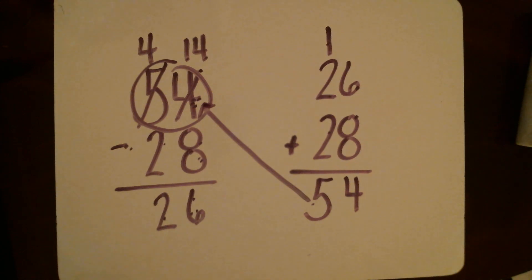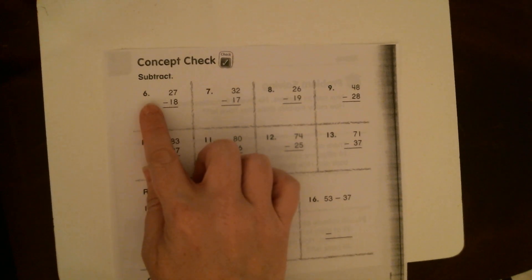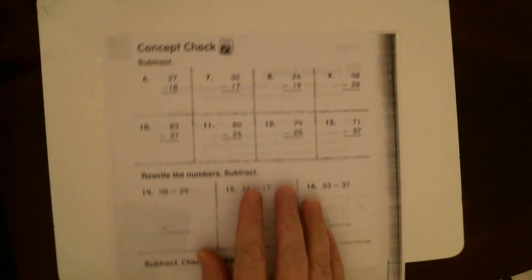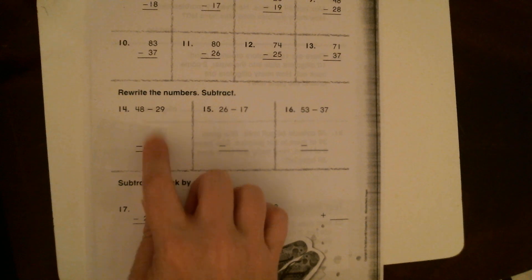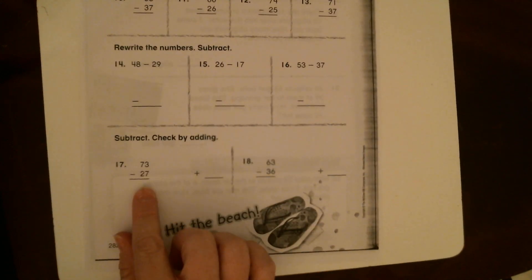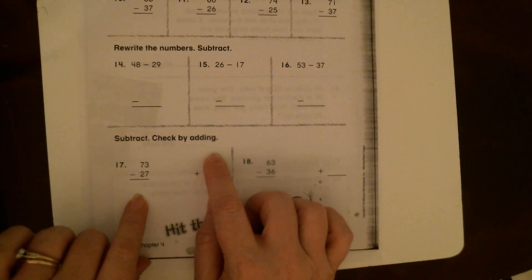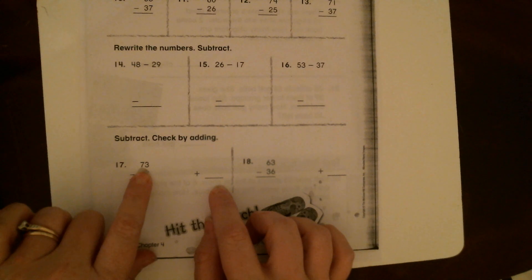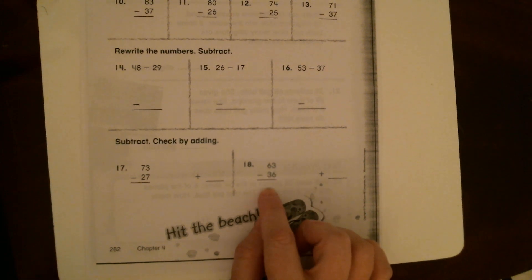Okay, so that's what you guys are going to work on today. You're going to do your concept check, make sure you put your name and date on it. It starts with number six. You're going to do these problems, just practicing your regrouping if needed. Here you need to rewrite these horizontal problems, rewrite them vertically. Down here you're going to subtract and then check it by adding. Remember you're going to add your answer or the part that you got plus the part that you took away, and it should equal the number you started with, that whole number.